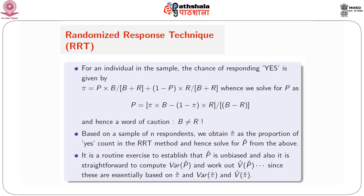It is a routine exercise to establish that P-hat is unbiased, and it is also straightforward to compute the variance of P-hat and work out V-hat of P-hat. That's because P is related to pi through a linear equation. So I can obtain, using binomial sampling results, the variance of pi-hat and V-hat of pi-hat, and use that to obtain the estimate of P and the variance of P and V-hat of P-hat. These are all routine exercises.